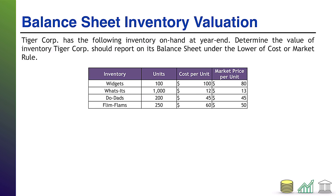We go through the table and identify which value is lower — cost or market — for each item. For widgets, the market price is lower. For the whatchamacallits, the cost price is lower. For the doodads, they're the same, so it doesn't matter. For the flim flams, the market price is lower. Now it's simply a matter of multiplication — I'll add a totals column.